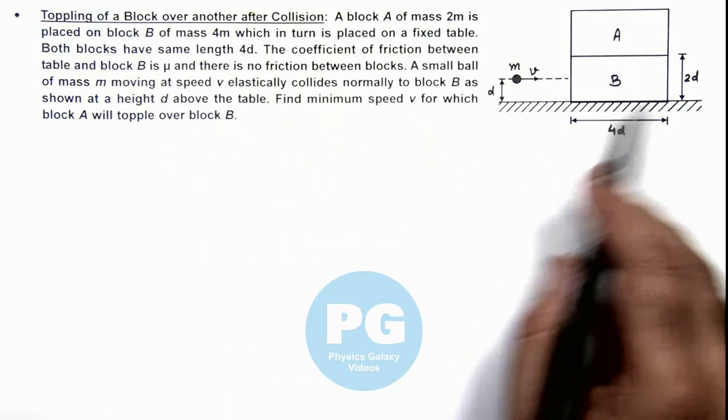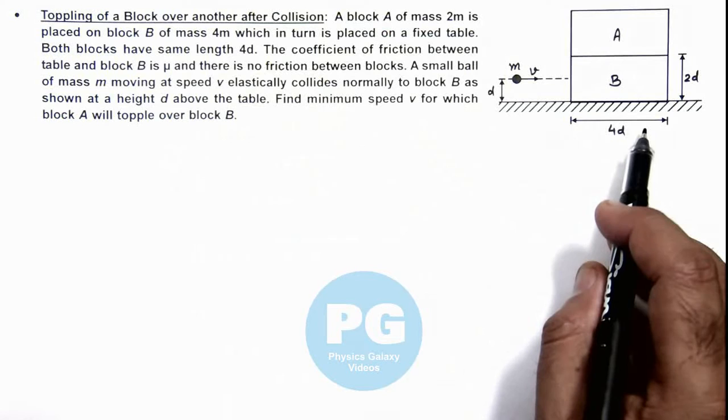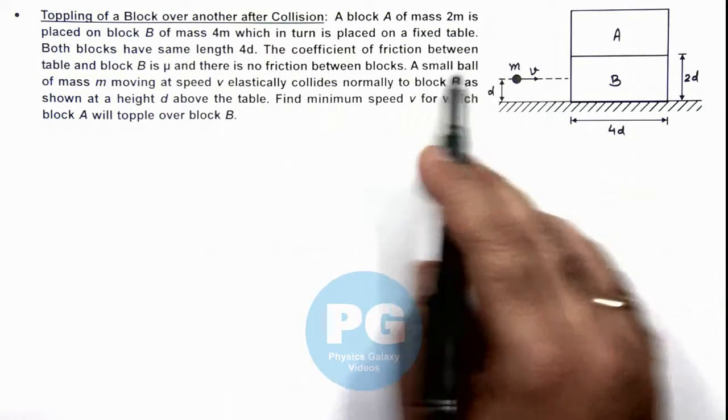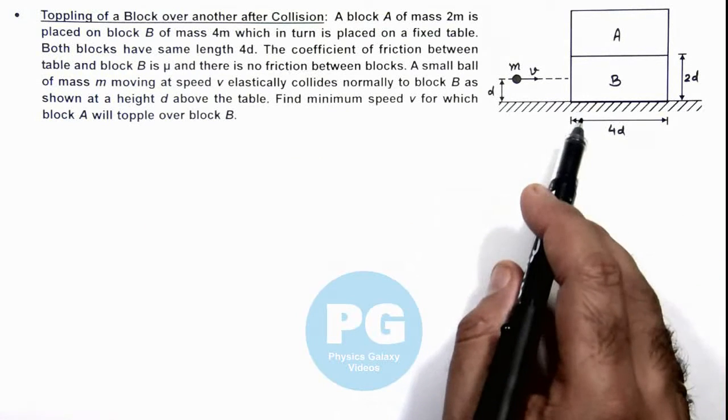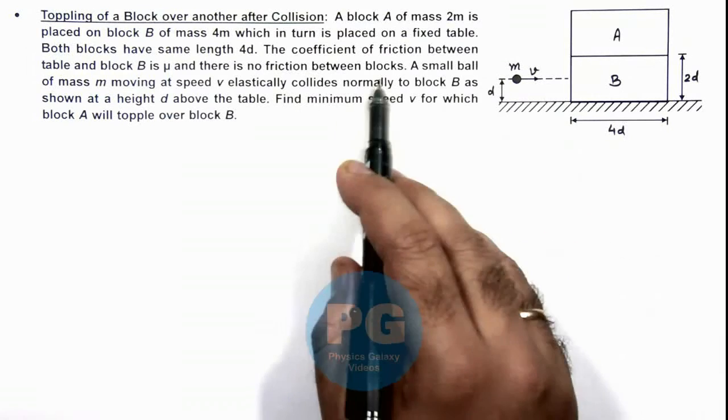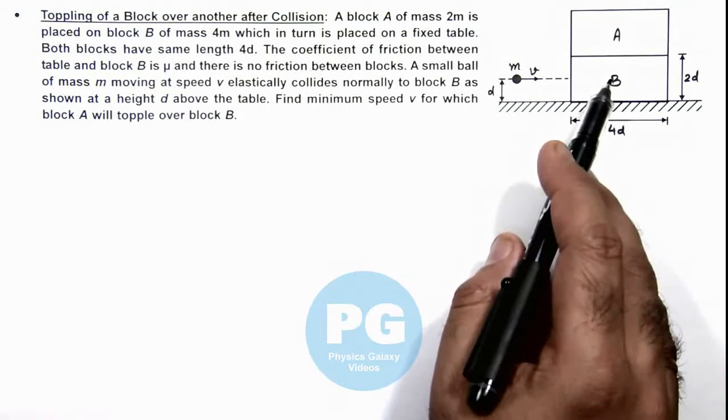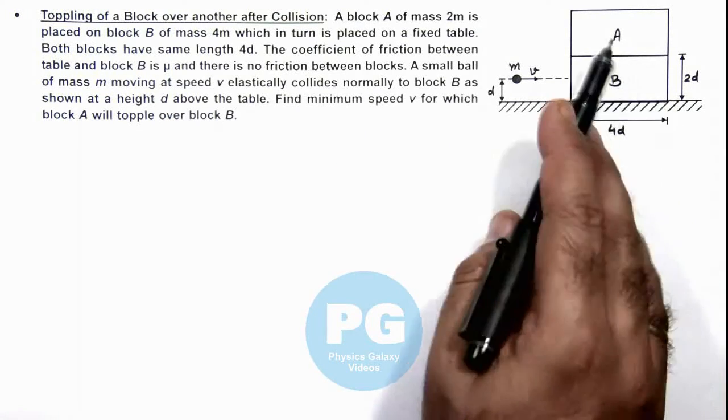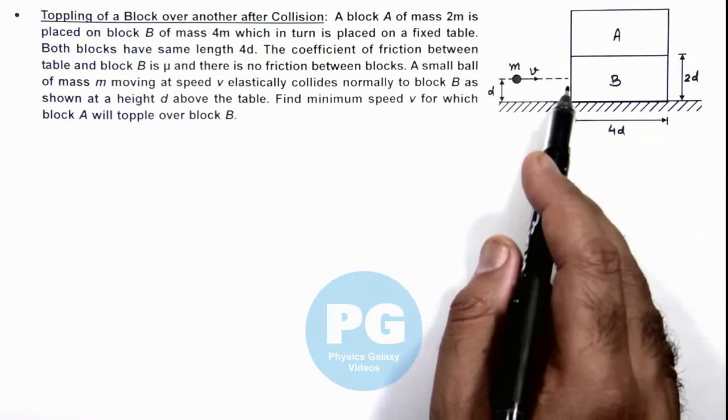The blocks are having length 4d, and the coefficient of friction between table and block B is μ. And there is no friction between the two blocks. That means when B slides, A will remain at rest on its own position due to inertia.